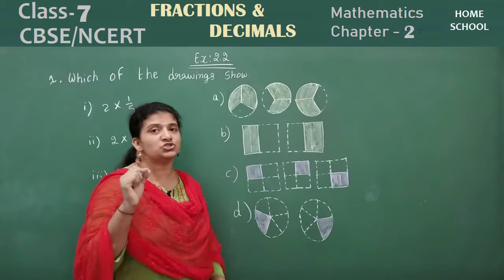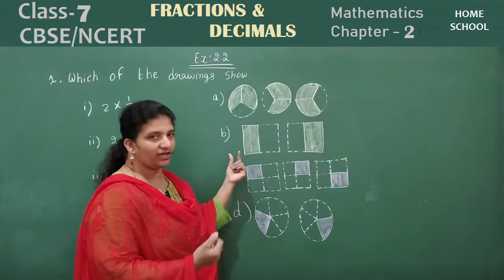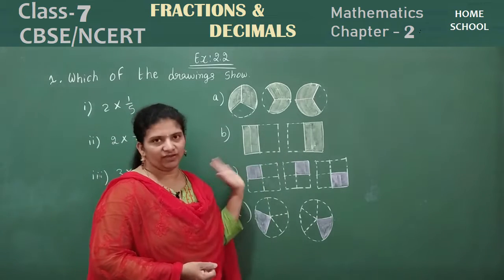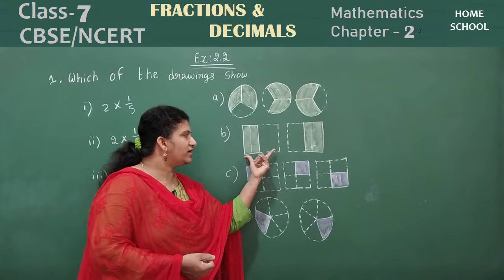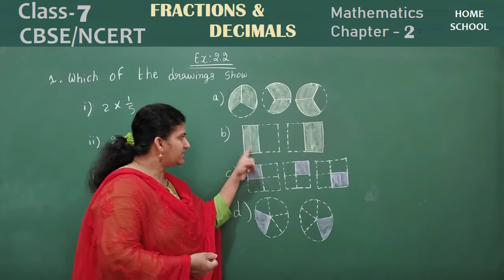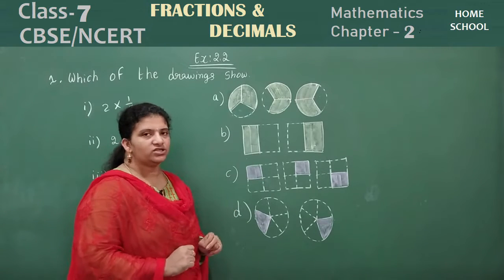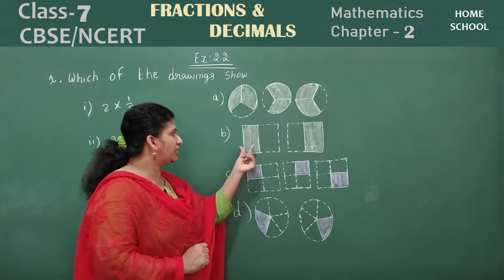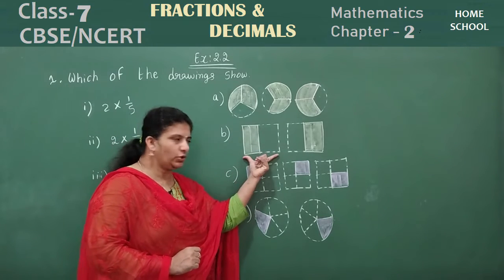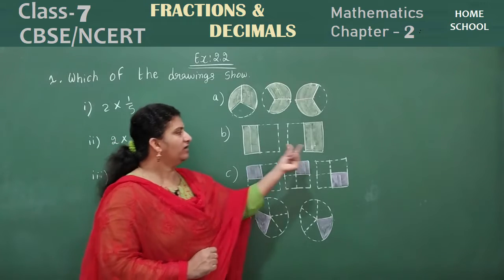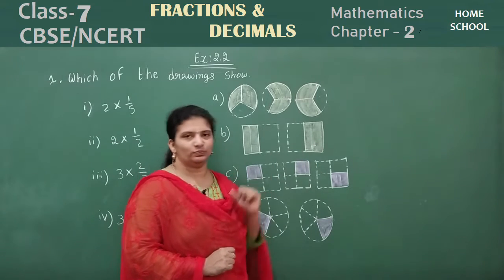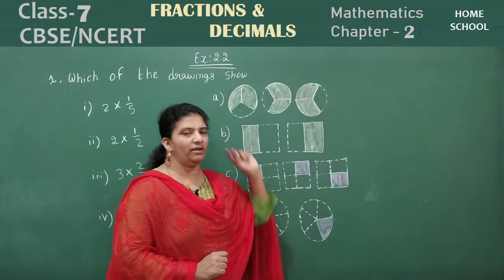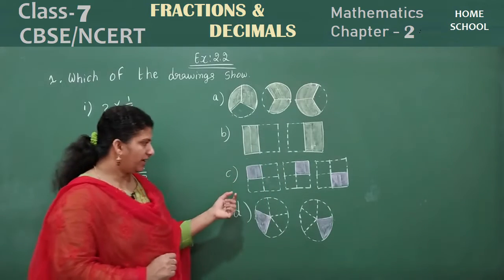Let us look at the next set. You can see 2 separate figures. Each figure is divided into 2 parts and one part is shaded. How can you write this fraction? The whole is 2, one part is shaded, so it can be written as 1 by 2. There are 2 such figures, so 2 into 1 by 2.